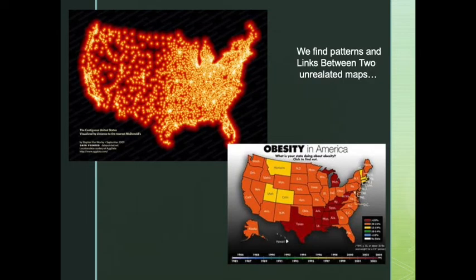We can find patterns between two unrelated maps. For example, on the top left you'll see a map containing all the locations of McDonald's in the United States. Similarly, on the bottom right, you will see a map of obesity in America, and you will notice that there are many more McDonald's in the areas where there are high concentrations of obesity in the United States, particularly all around the South.